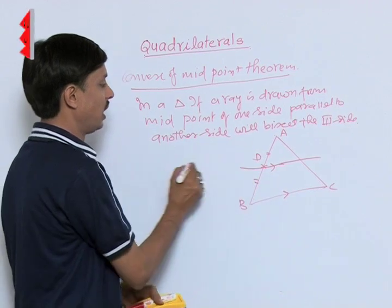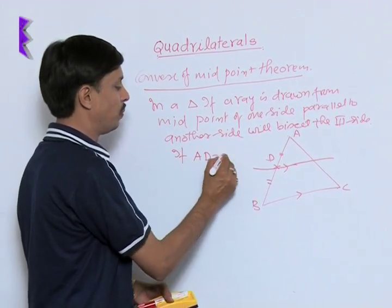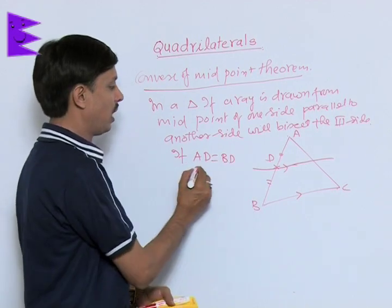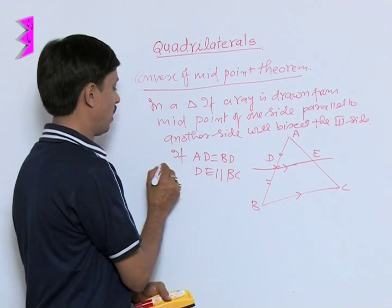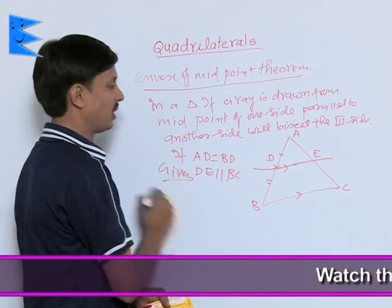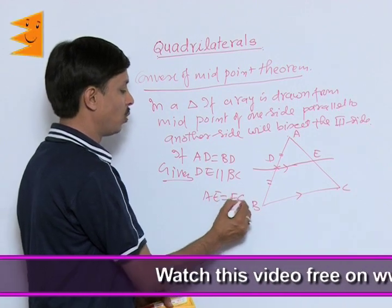That is, I can say that if AD equals BD, number one, and DE is parallel to BC, if this is given then what has to be, AE will be equal to EC.